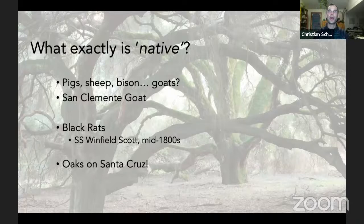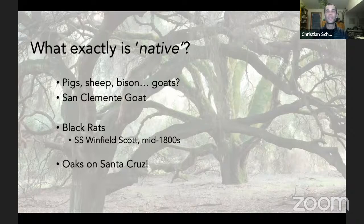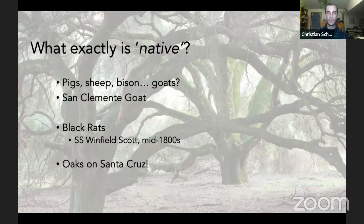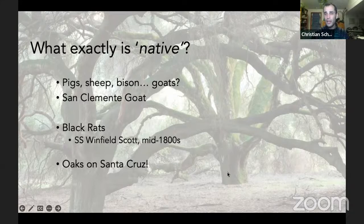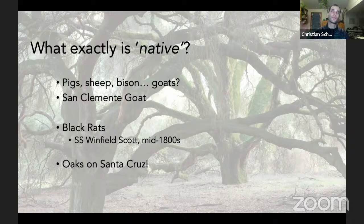You could even ask whether oaks are native on Santa Cruz Island, because we have good evidence that Native Americans were transporting acorns from the mainland via tomols — their dugout canoes — since acorns were a major food source. They were cultivating gardens or forests of food plants including black oaks and valley oaks that probably wouldn't have dispersed there on their own. It becomes complicated when trying to account for what is native versus introduced — it's a matter of history and at what point you start counting something as native.